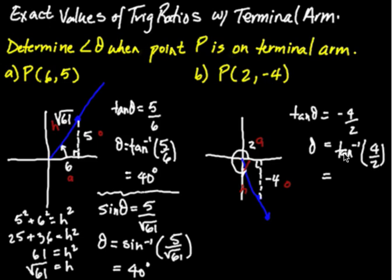In my calculator, when I take the tan inverse of 4 over 2, rounding to a whole number, I get 63 degrees.